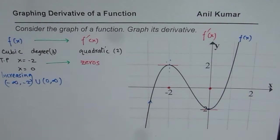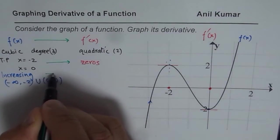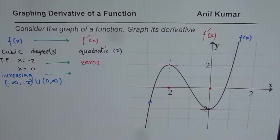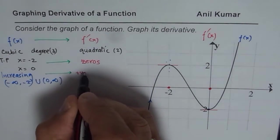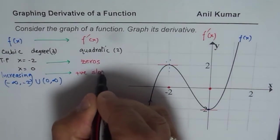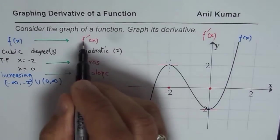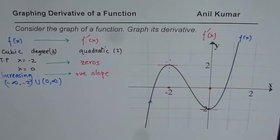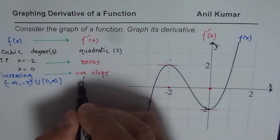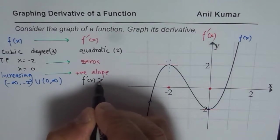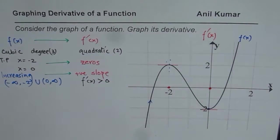Now, these increasing intervals means positive slope. It means positive slope. So positive slope means f dash x is greater than 0. So in this time, f dash x should be greater than 0. So increasing intervals.